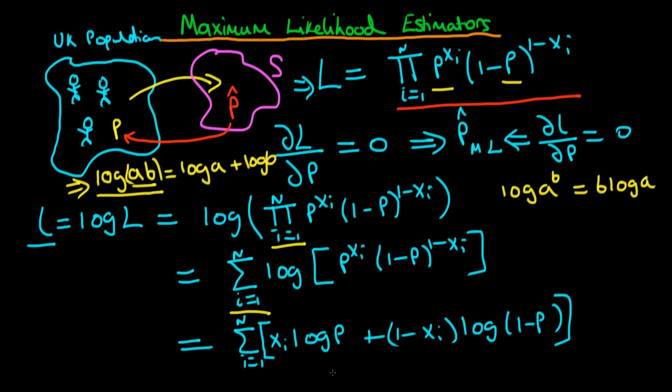Okay, can we simplify this any further? Well we can, because essentially the log of P is just a constant, so we can take it outside of the sum. So we're just going to get log of P times the sum of xi from i equals 1 to n, plus now we're going to have log of 1 minus P times the sum from i equals 1 to n of 1 minus xi.